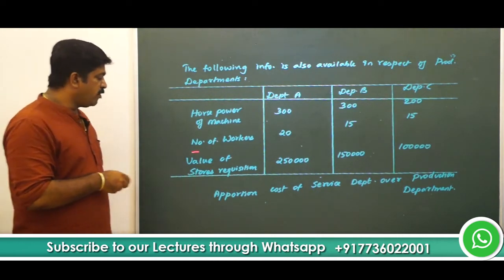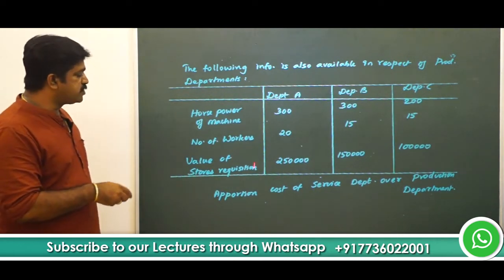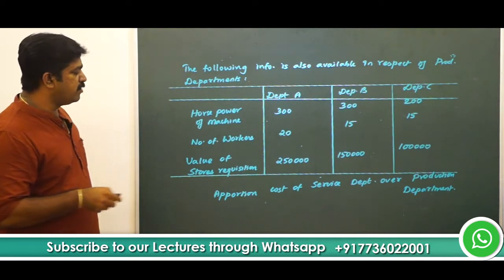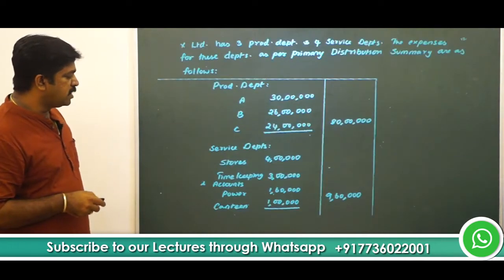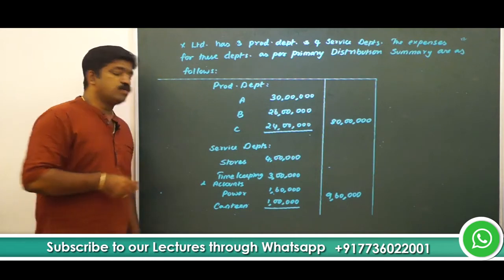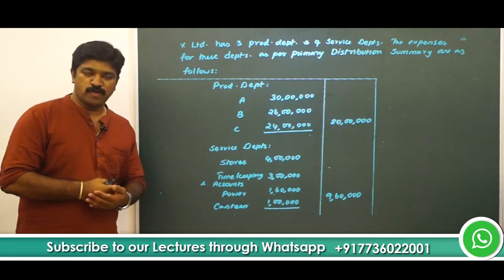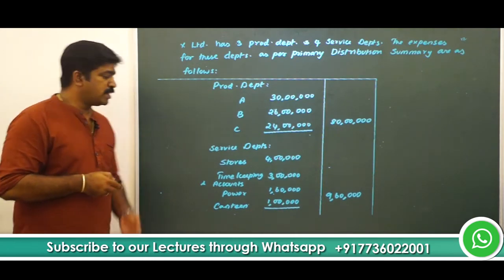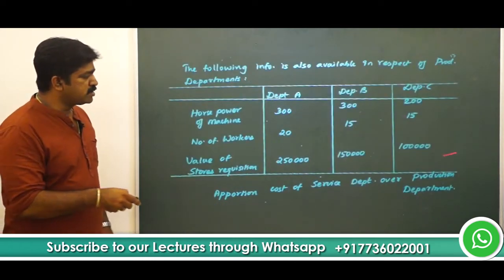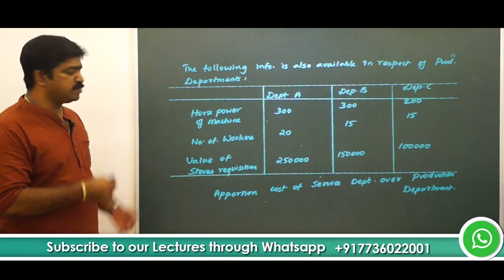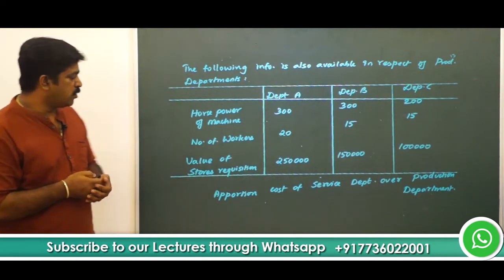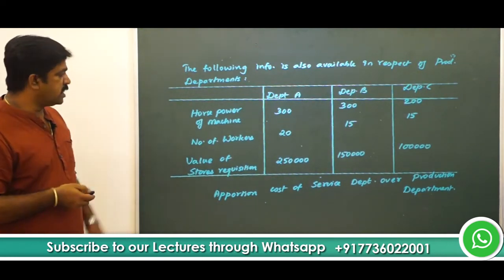Then we have the value of stores requisition — 2,50,000; 1,50,000; 1,00,000 — and that can be related with the stores department. The stores amount is 4 lakh. So that can be apportioned in the ratio 25:15:10, which can be further reduced to 5:3:2. Let us now prepare the secondary overhead distribution statement.